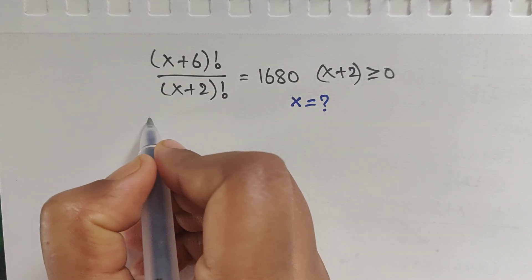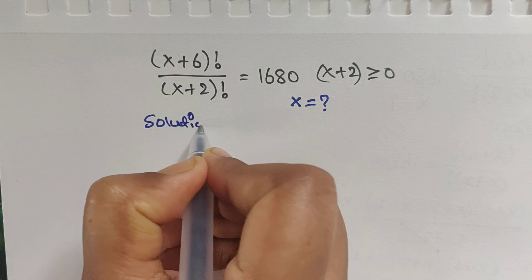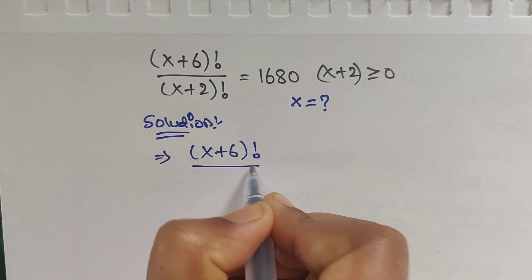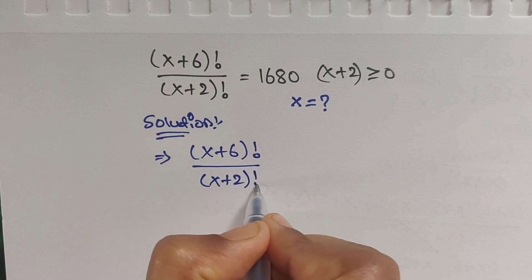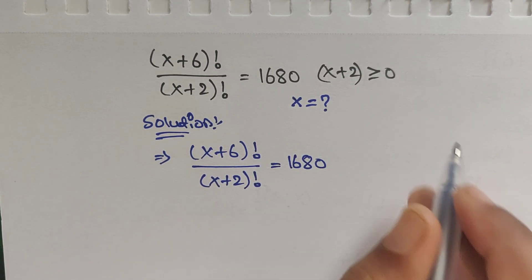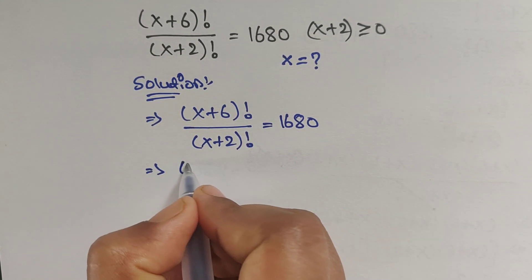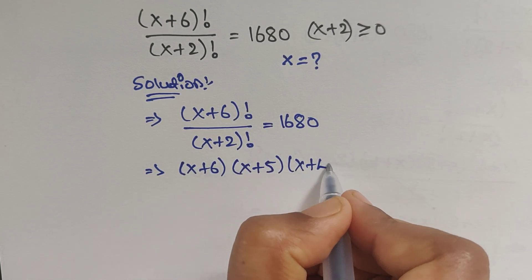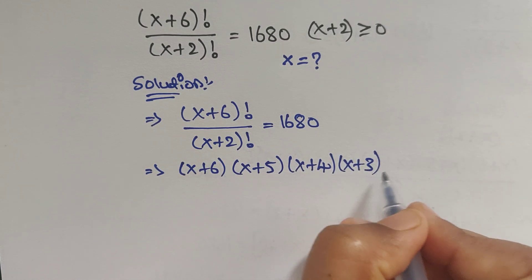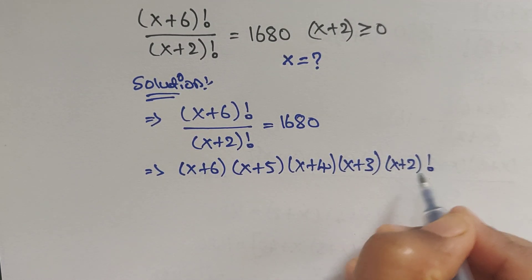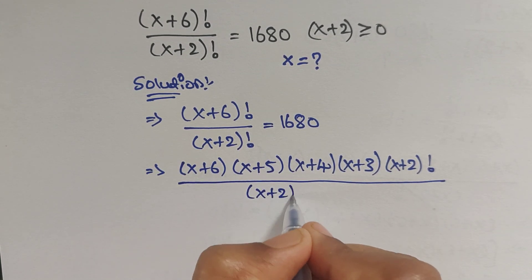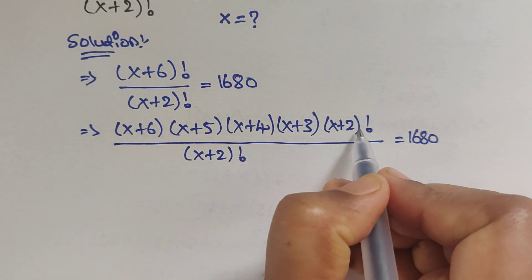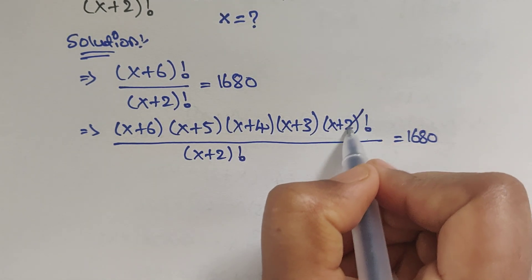So how do we solve this problem? Let's see. We have (x+6)! divided by (x+2)! equals 1680. We can expand (x+6)! as (x+6)(x+5)(x+4)(x+3)(x+2)! divided by (x+2)!. The (x+2)! terms cancel.